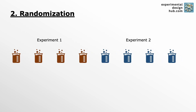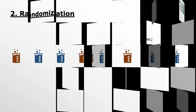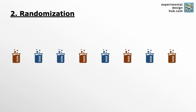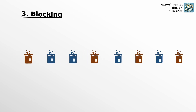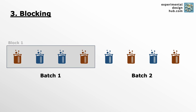When we randomize, we conduct our experiments in a random order. This technique mitigates the impact of uncontrolled disturbance variables and reduces bias. And last but not least, blocking is used to control for the variability introduced by known but irrelevant variables. To do that, we group similar experimental units into blocks.